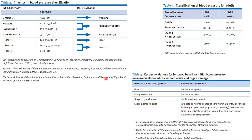Looking at the classification table — don't be worried, there's a lot of data but it's straightforward. The authors compared the latest document with the previous one. Optimal means the person is actually quite healthy — systolic over diastolic, the classic 120/80. If the person has less than 120/80, the old category labeled this as optimal.